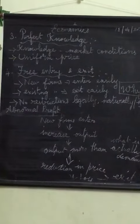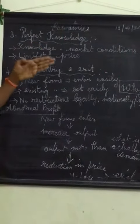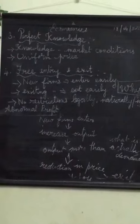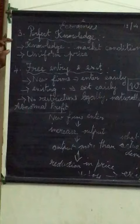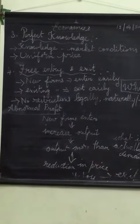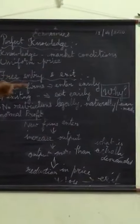So, since uniform prices, people are having the perfect knowledge in perfect competition form of market. Next feature is free entry and exit.